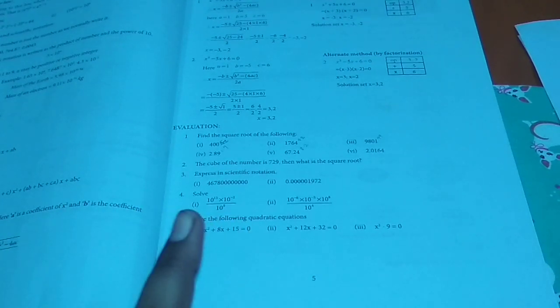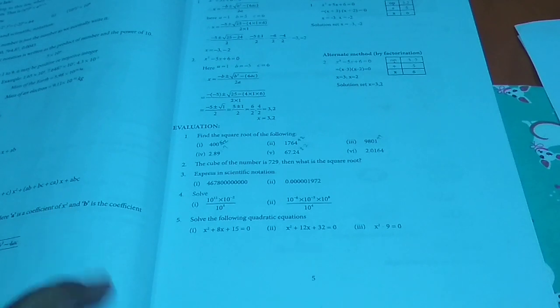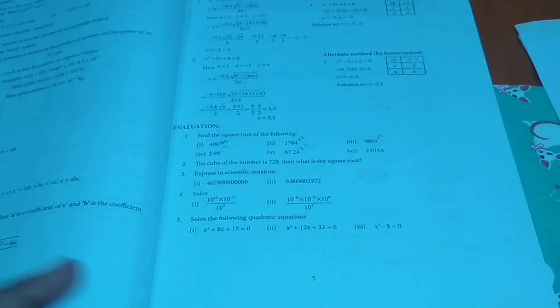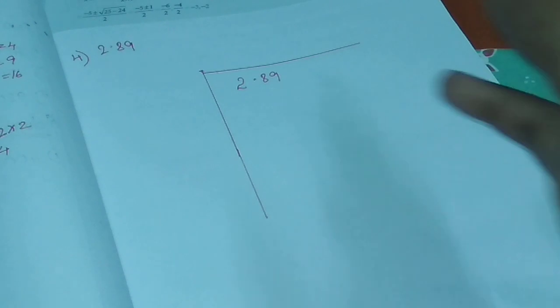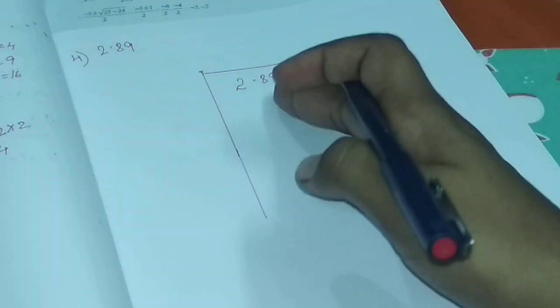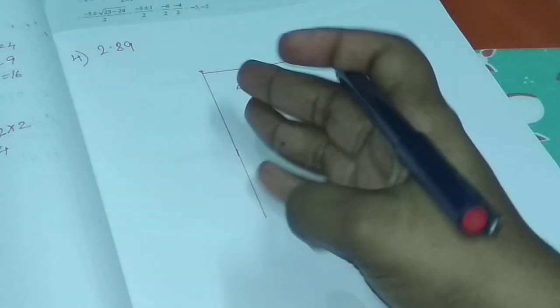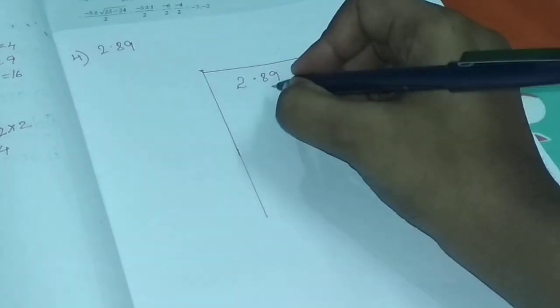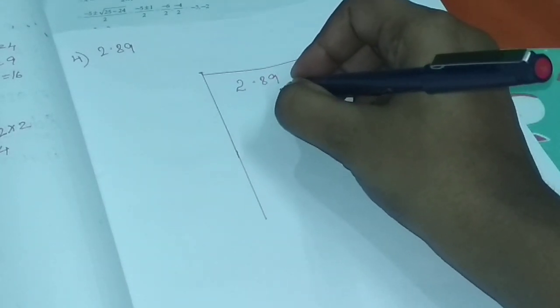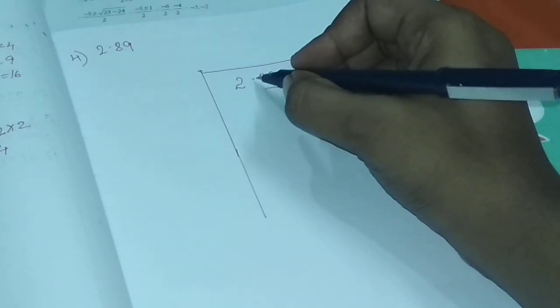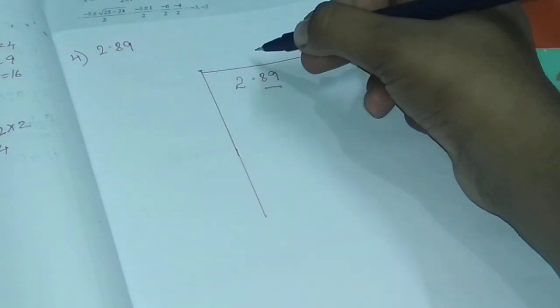So first, we will find the square root of the following: 1, 2, 3. And then we will see the decimal. The decimal is 2.89. So this is the long division method. First, we will pair from the right side. If you have a decimal, we will pair from the right side.